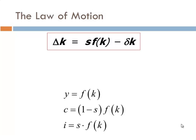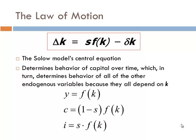That leads us to the law of motion. Delta k tells me exactly how the system will evolve — it's the Solow model's central equation. If I know little k, I know output per worker, consumption per worker, and investment per worker. So if I can solve this one equation, it will tell me what happens with the entire system. This is the law of motion — it governs the behavior of this whole model.